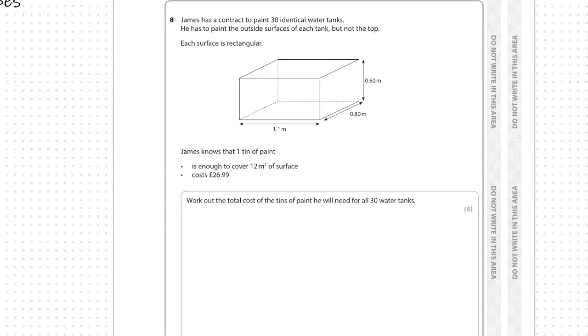Question 8: James has a contract to paint 30 identical water tanks. He has to paint the outside surfaces of each tank but not the top. Each surface is rectangular. You've got a 3D representation of the water tank with the measurements. The measurements are all in meters, it is not mixed units.